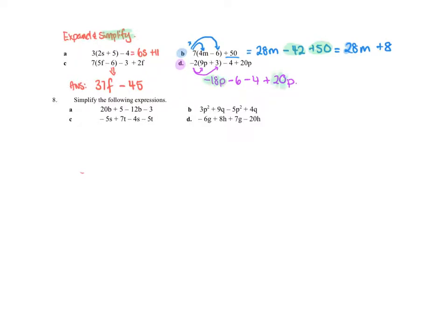I'm then going to group like terms. So the p are like terms, and the numbers are like terms. So if I wrote that out in like terms next to each other, I could say I have 20p minus 18p, and then I have minus 6 minus 4. And I'll keep simplifying that, because 20p minus 18p is 2p, and minus 6 minus another 4 is minus 10. There's my answer.